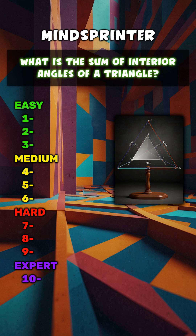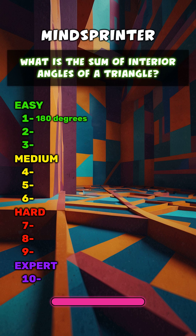What is the sum of interior angles of a triangle? 180 degrees.